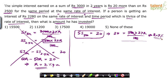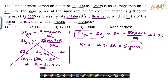Now look at the actual second part of the question. Rate of interest is 2%. Time period is 3 times the rate of interest, which means 6 years. The simple interest given is 2280. We need to find the principal. Rather than using the formula directly, we'll use the percentages method — a smarter approach.